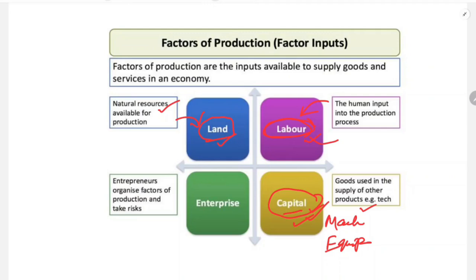The last factor of production in commercial business is enterprise, also called the organization. Its main important function is that it will organize land, labor, and capital to produce goods and services. So these are the four types of factors of production.